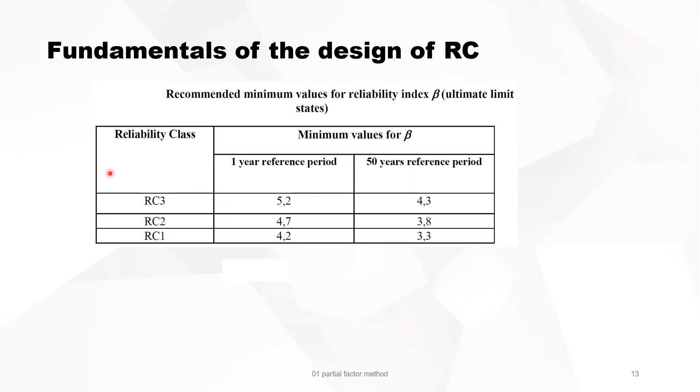Together with the consequence classes, we have the reliability classes. And there is an index, beta, the reliability index. If you take the reliability index with a reference period of one year or 50 years, then you have different values corresponding to the different consequence classes.